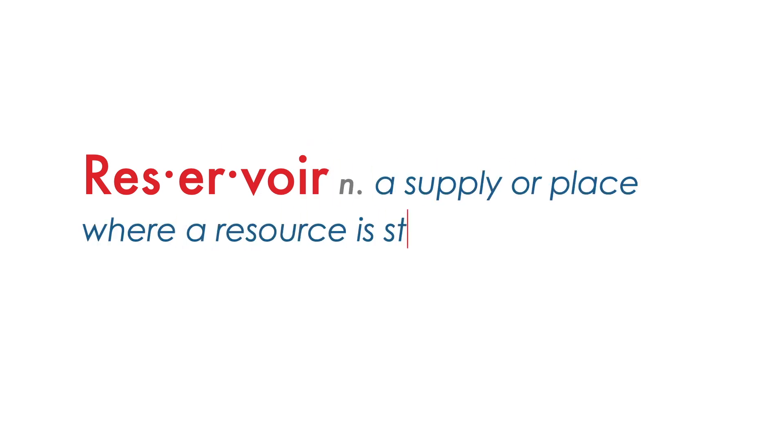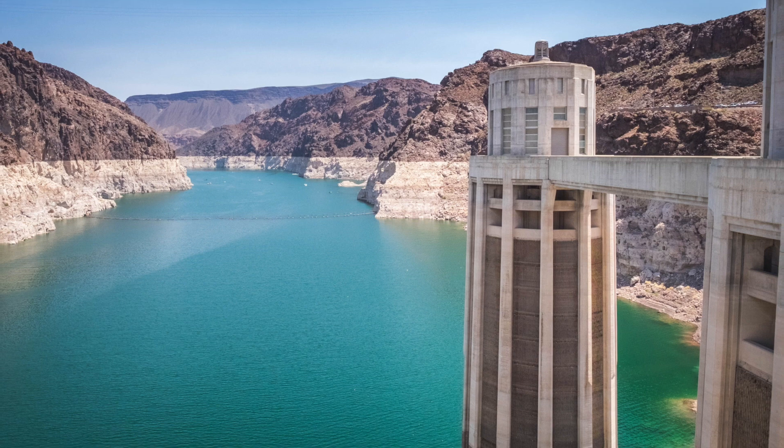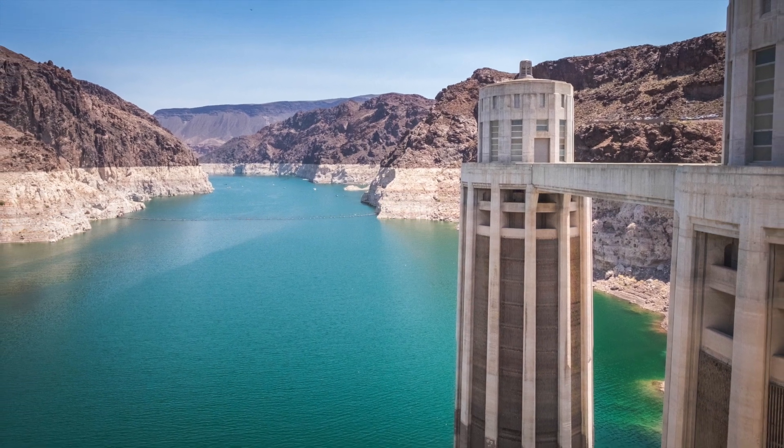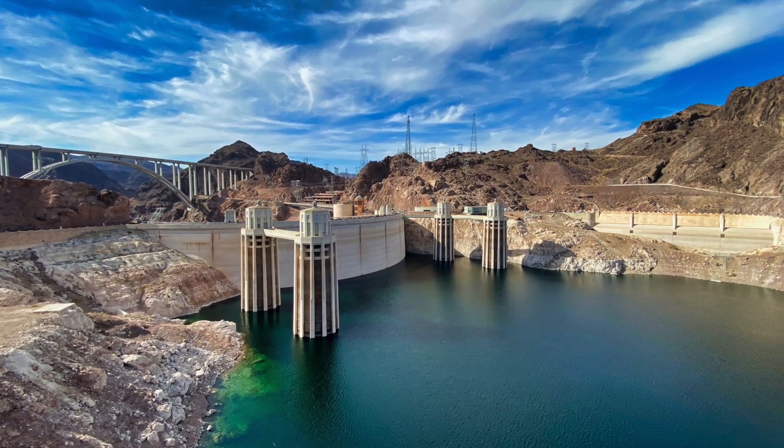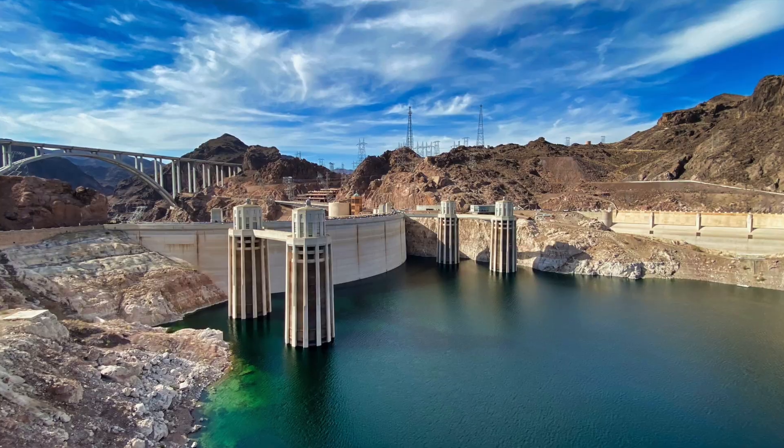If it weren't for the hydrologic cycle, there would be little chance that human life could persist at all. The hydrologic cycle, or water cycle, describes the mechanisms that help cycle water through the various reservoirs on planet Earth. The word reservoir simply refers to a supply or place where a resource is stored. In this video, we will use the term reservoir more broadly to refer to any of the diverse places in which Earth's water is naturally found. Water in these reservoirs may last for just a few moments or may persist for thousands of years, and Earth's water reservoirs are constantly changing as a result of the hydrologic cycle.